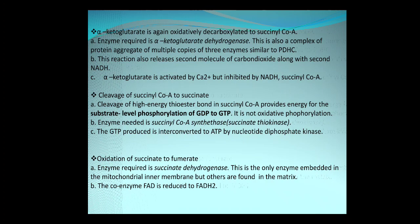The succinyl-CoA formed in the previous step is converted to succinate by cleavage of the high-energy thioester bond between succinyl and CoA. When this bond is broken, it provides energy for the reaction and gives rise to a GTP molecule. This is a substrate-level phosphorylation — the step in the TCA cycle where substrate-level phosphorylation takes place. A GTP molecule is formed but this is not oxidative phosphorylation since it does not involve the electron transport chain. The enzyme required is succinyl-CoA synthetase.